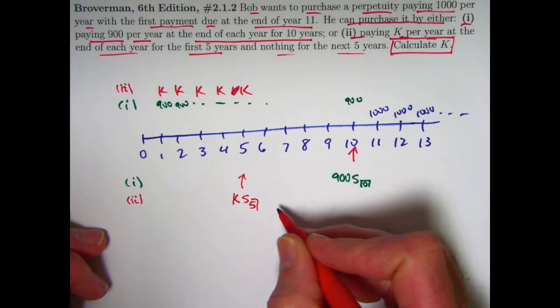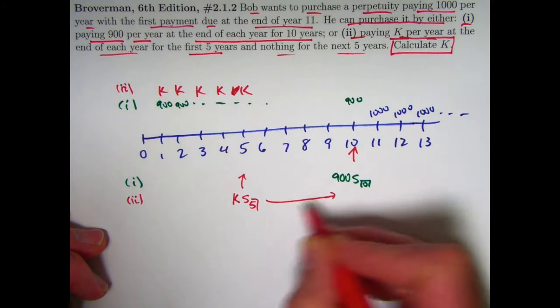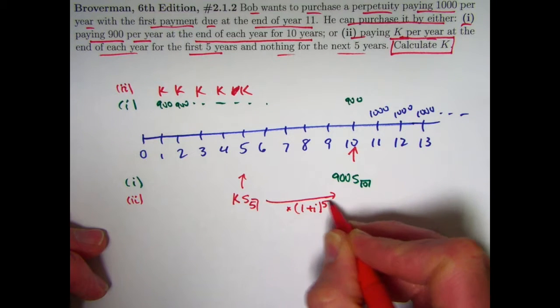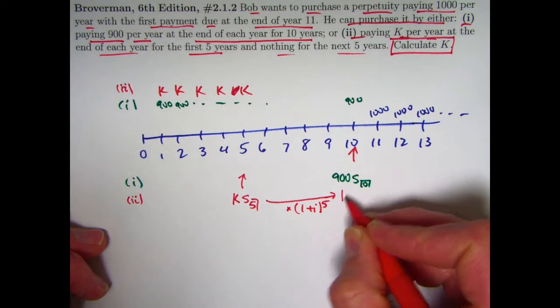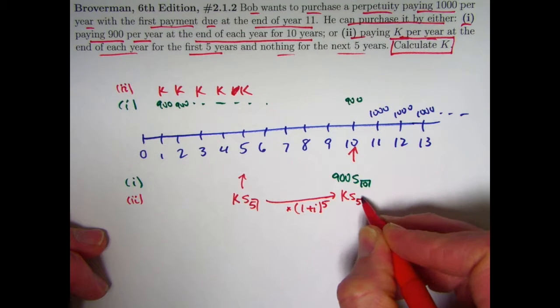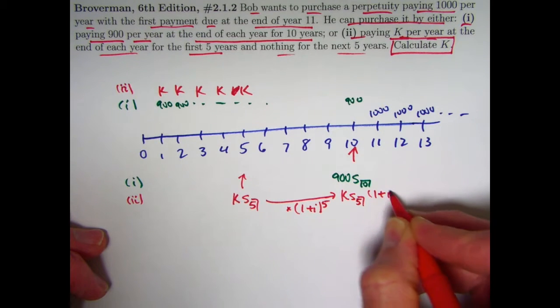But I want to move that forward to time 10. I need to multiply it times the growth factor one plus i to the fifth. So at time 10, the value is going to be k S5 times one plus i to the fifth.